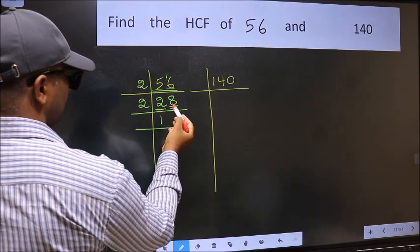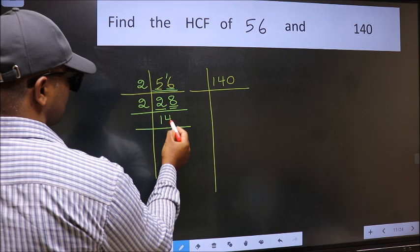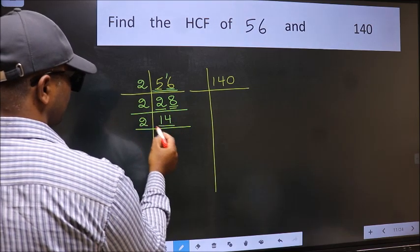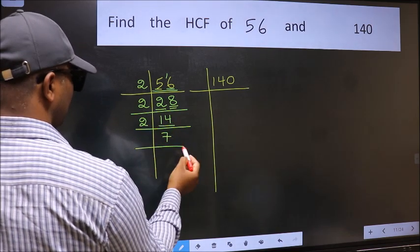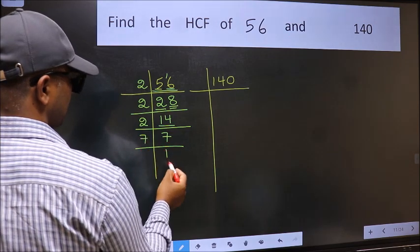The other number 8. When do we get 8 in the 2 table? 2 times 4 is 8. Now 14 is 2 times 7 equals 14. Now 7 is a prime number, so 7 times 1 is 7.